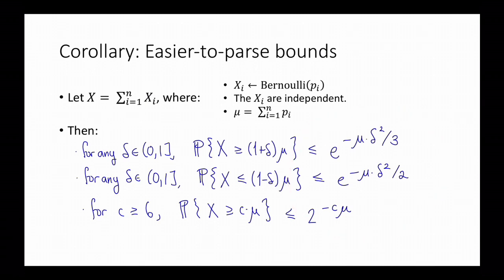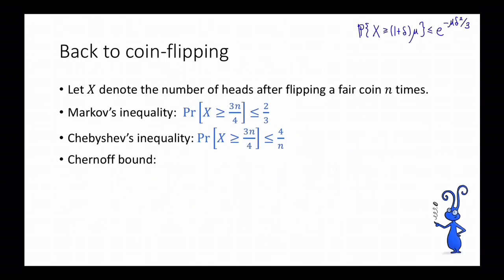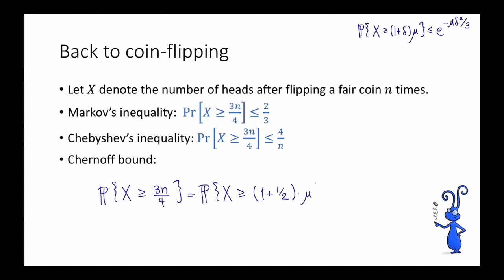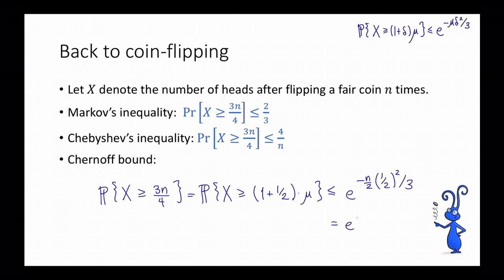We're not going to prove these simpler bounds here, but they follow from the bounds proved before by bounding those expressions above. It's a good exercise to try to prove these yourself, or to plot these expressions for various values of μ and δ and convince yourself that these ones are always bigger. To illustrate the simpler bound, let's return to the coin flipping example: x is the number of heads after flipping a fair coin n times, and we want the probability that x ≥ 3n/4. Setting δ = 1/2, the bound gives e^(-n/2 · (1/2)² / 3) = e^(-n/24). This still gives the same qualitative result — exponential decay in n — but is much easier to apply.